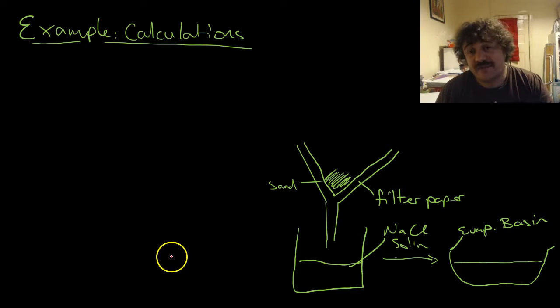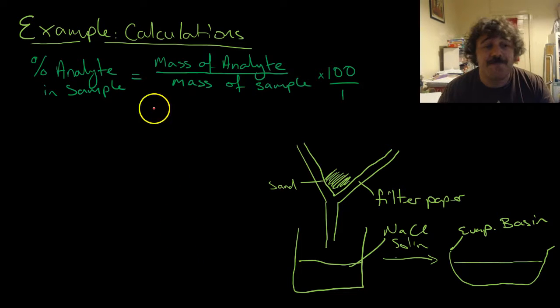Then we have to do some calculations. It's chemistry - we like math, we're pretty good at it. The formula essentially is this: the percent of the analyte is the mass of the analyte divided by the mass of the sample, times 100.